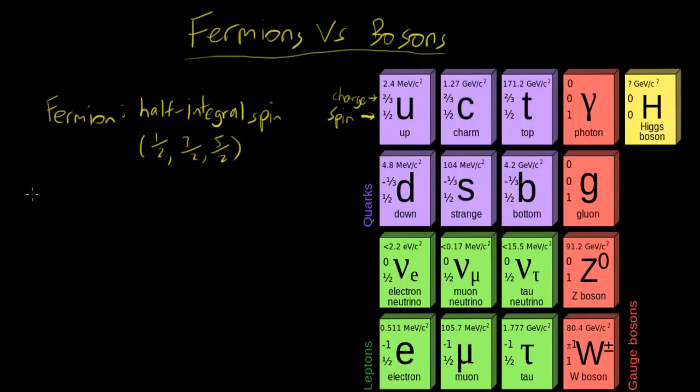Now a boson is any particle that has an integer spin, or an integral spin. For example, 0, 1, 2, etc.